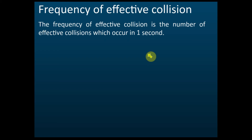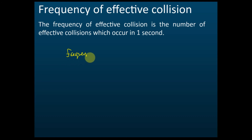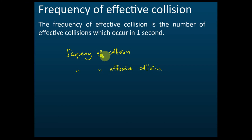There are two important phrases: frequency of collision and frequency of effective collisions. Make sure you know the difference. Frequency of collision refers to all collisions — some may produce products, some may not. Not effective collisions result in reactants coming back unchanged. Effective collisions are those with the correct orientation that overcome the activation energy and produce products.